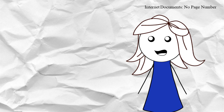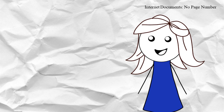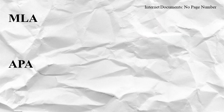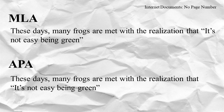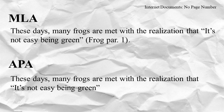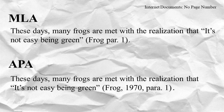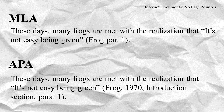Internet documents can be especially complicated, so let's look at some of those. Both formats require that if you have an internet source with an author and a date but no page number, replace the page number with the paragraph number. For MLA, use the abbreviation "par." For APA, use "para." If you're citing a longer source, such as a study, you can also include the section heading and count the paragraphs under that heading.